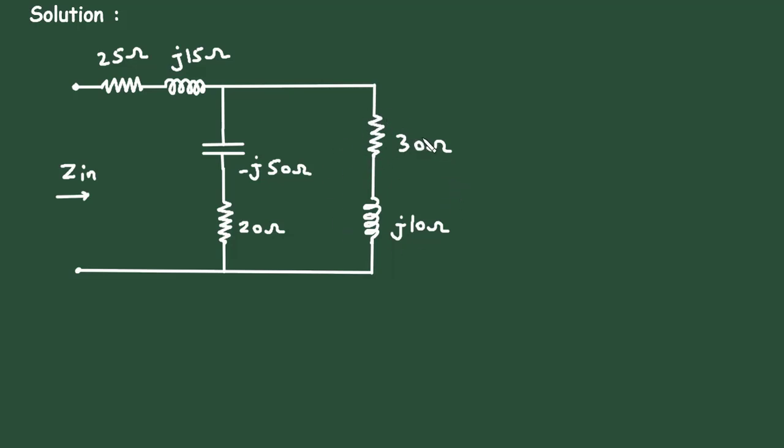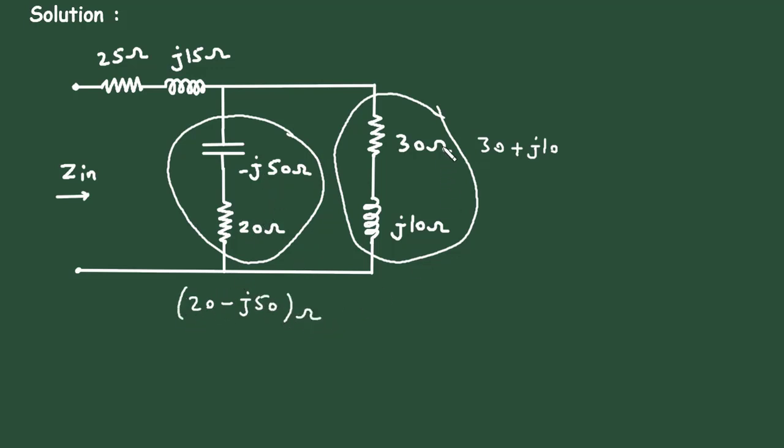So, this 30 ohm and this J10 ohm, this will be of total 30 plus J10 ohm. And here this is 20 minus J50 ohm. And this is 30 plus J10 ohm. These are connected in parallel.